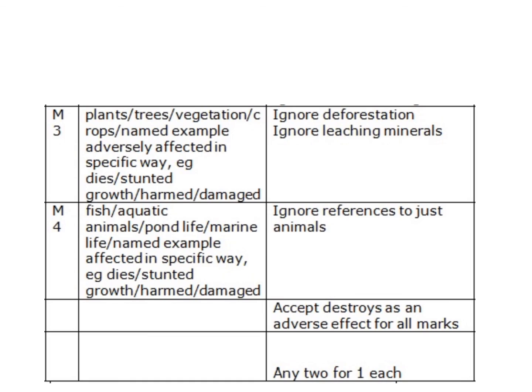Other acceptable answers include: it damages plants, trees, and vegetation. It also harms fish and aquatic animals — note that references to just 'animals' are ignored; you need to specify fish or aquatic life. The pH change is very important to the balance of the ecosystem.